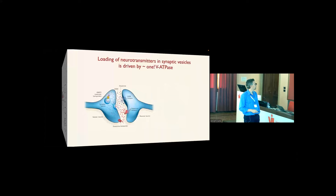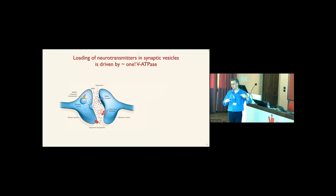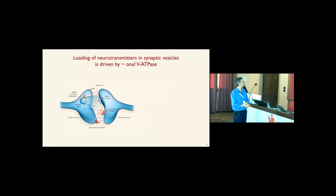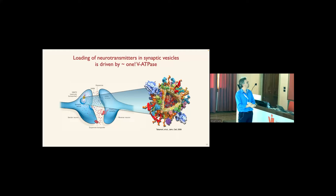Communication between two neurons does not happen through physical contact but through neurotransmitters released in the synaptic cleft. By diffusion, these approach the second neuron. Before release, they are stored inside single synaptic vesicles. Single synaptic vesicles carry on average 1.2 copies of the VATPase — the molecule shown here in blue. The VATPase is responsible for establishing the energy gradients that drive the loading of all different types of neurotransmitters into synaptic vesicles — a real single molecule system.